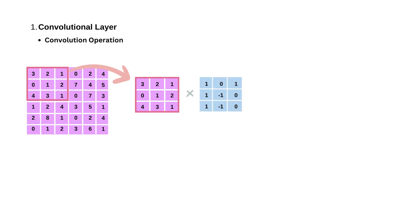You multiply the numbers in the filter with the corresponding pixel values in the image. After multiplying, you add up all these results. This gives you one number, which represents what the filter sees in that part of the image. The multiplication and summation is known as the convolution operation.